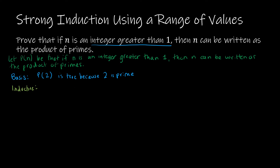It will become clear as we look at this proof why we have to use strong induction as opposed to normal mathematical induction. For our inductive step, our inductive hypothesis is that p of j is true for 2 ≤ j ≤ k. Because p of n is a statement, we're saying that j can be written as the product of primes — so all values of j from 2 up to k can be written as a product of primes. From here, what we need to prove is that p of k plus 1 is true, which is that k plus 1 can be written as a product of primes.